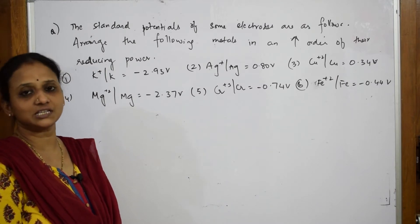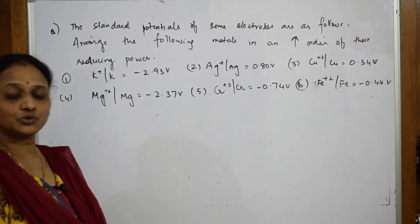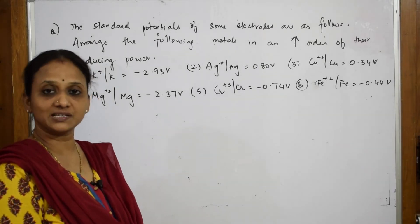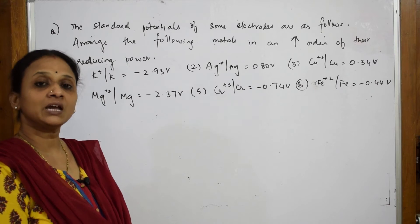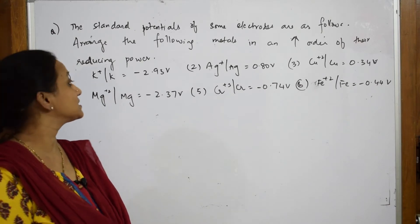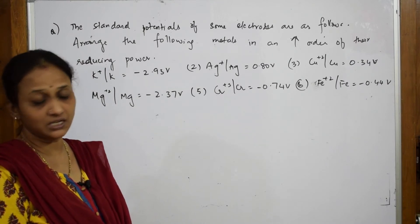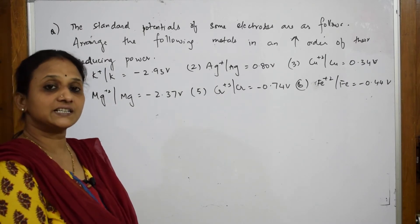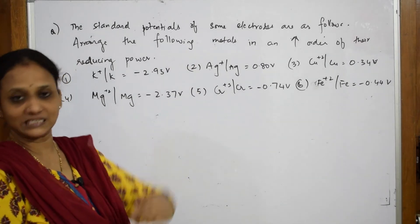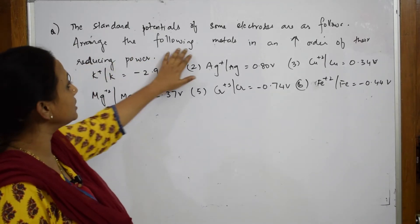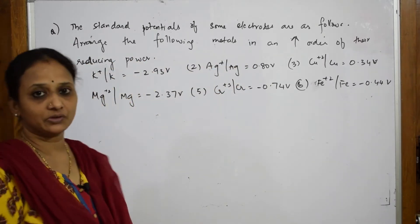I'll be trying to solve all these and show you how to do it in the exam. Now let us see the first question — they give us the standard potentials of some electrodes. Basically, we have a series called the electrochemical series, where all these metals are arranged according to their oxidizing and reducing nature, according to their oxidizing power and reducing power. In this question, they've asked us to arrange the following metals in increasing order of reducing power.